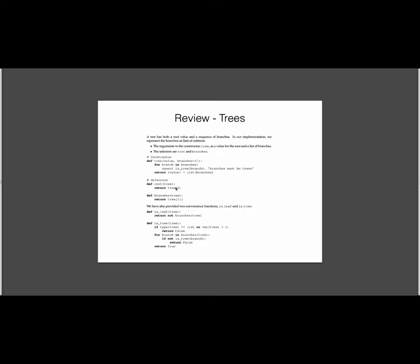And so we have two selectors. We can get the value of the tree, which is the value at the root of the tree with root tree, and the list of our subtrees, which is branches, which takes as an argument a tree. And then there are also two convenience functions, is_leaf and is_tree, which are going to check that we have a valid tree, and that we also have a leaf. So a leaf, just a reminder, a leaf is a tree with no branches.